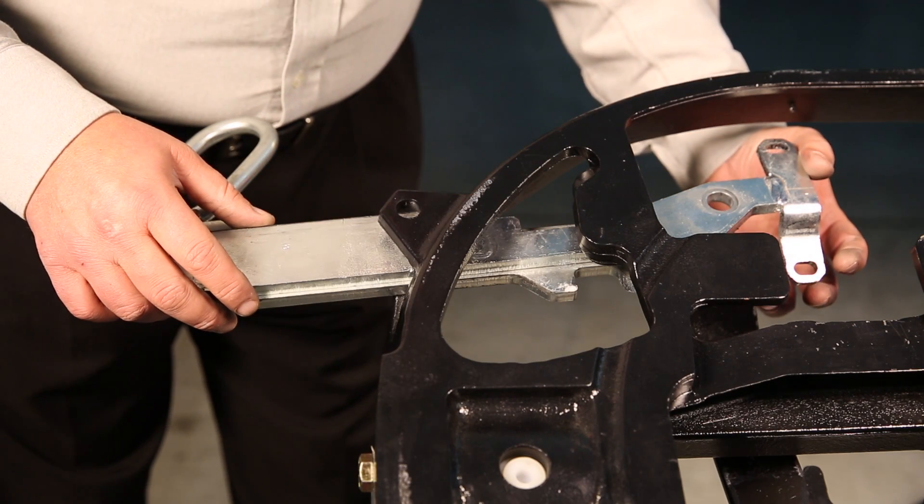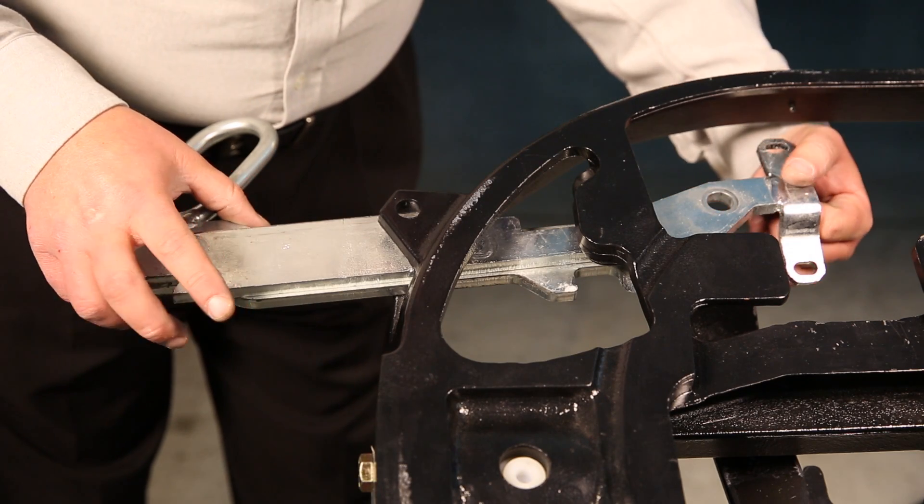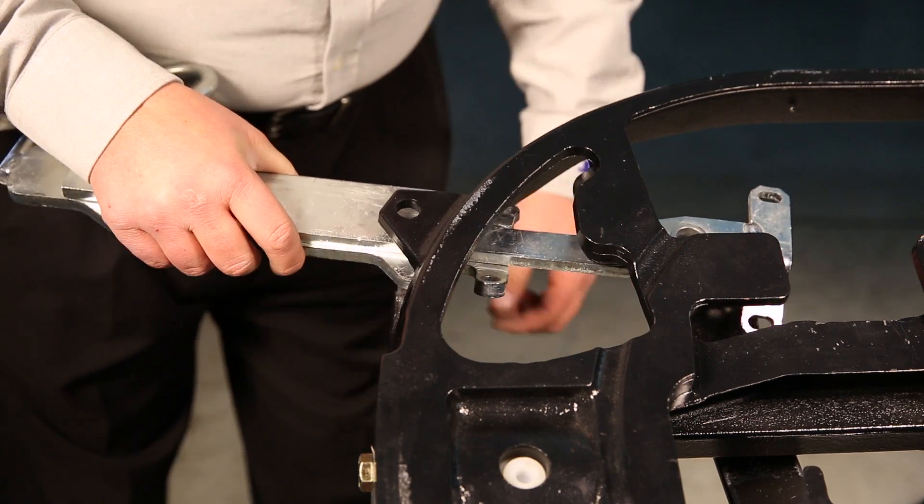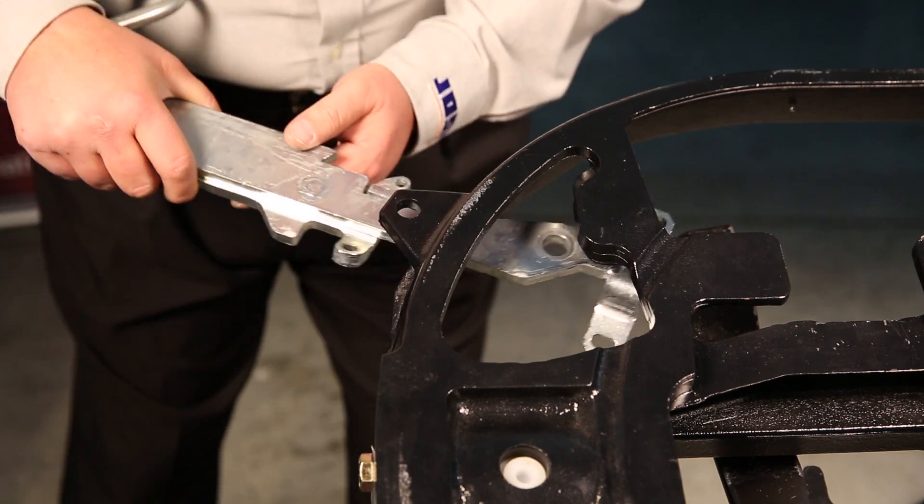Once the bolt has been removed from the release arm, you want to extend the handle out and start feeding it through the slotted side of the casting.